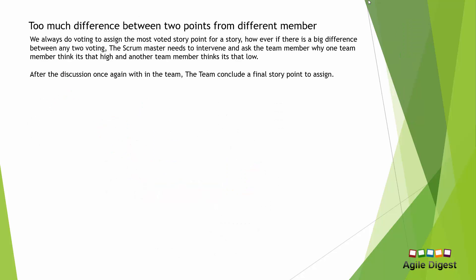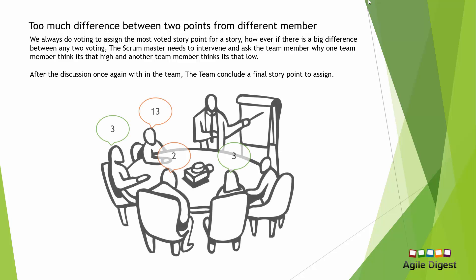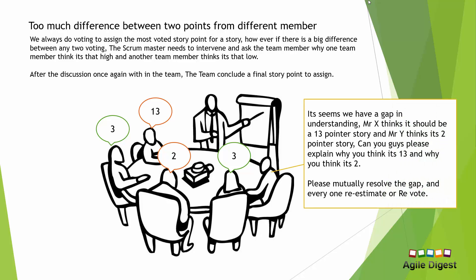Second tip: what happens when one team member says story point 21 or 13 and another says story point 2? That's a very big difference. The Scrum Master encourages both to discuss in detail — why one thinks it's so high and why the other thinks it's low. The entire team goes through another round of discussion, then re-estimates. After discussion, they may find the estimate really is 13 because someone was missing something, or that the person estimating 13 was over-estimating. The Scrum Master asks everyone to mutually resolve the gap.